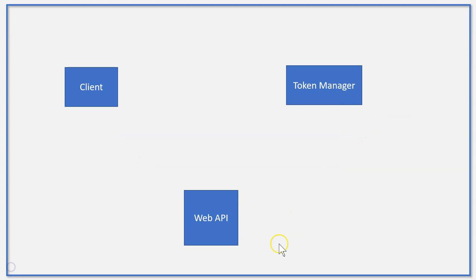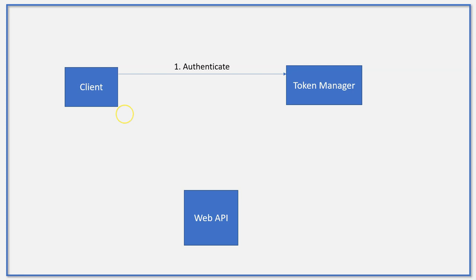From this diagram, you can see that we have a client and a WebAPI. The client is the consumer of the API. For authentication, we need the token manager to generate and verify the token. The client will authenticate against the token manager, and if authentication is successful, the token manager will generate a token, which is usually stored in a data store for verification purposes.